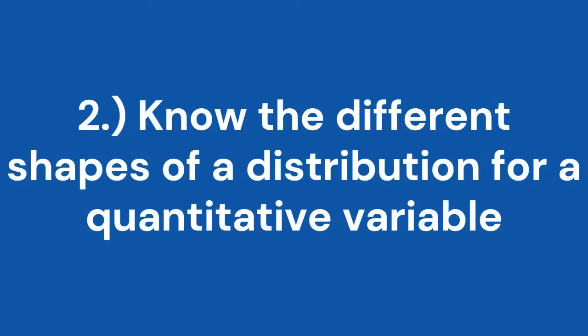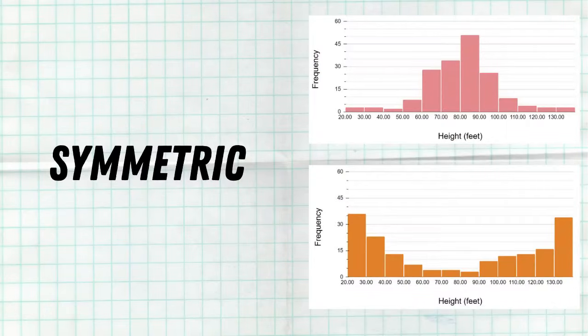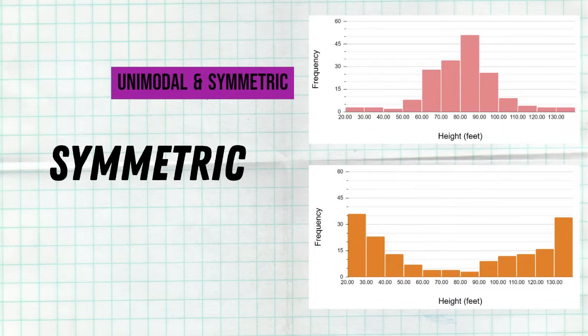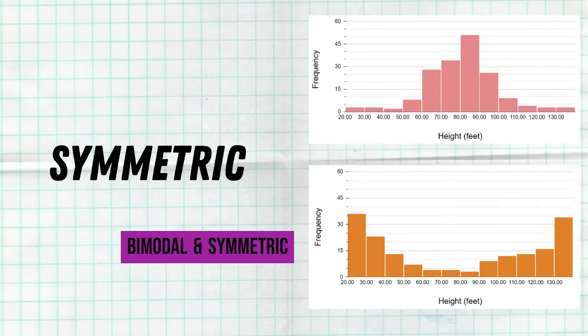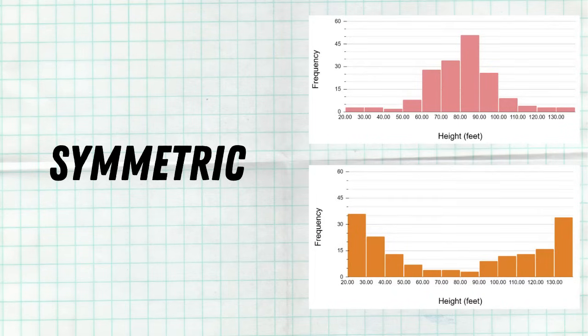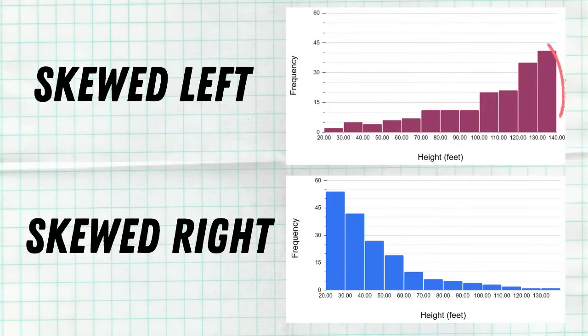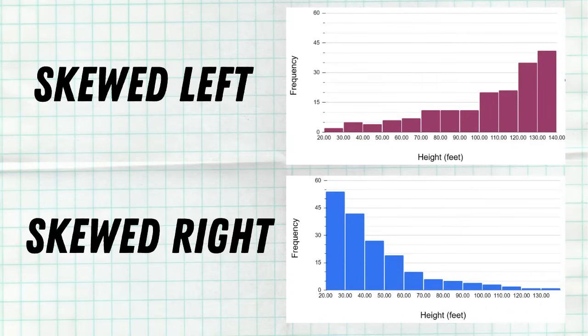Tip number two: make sure you know the different shapes and what they mean for your data. When your data is nice and symmetric, if it's unimodal and symmetric or mound-shaped and symmetric, it means the majority of your data is in the middle with a little bit of data on each side. You can also be symmetric when the majority of your data is on the outsides and very little in the middle. Skewed left means the majority of your data is on the right and less is to the left; skewed right means the majority is on the left and less is to the right.